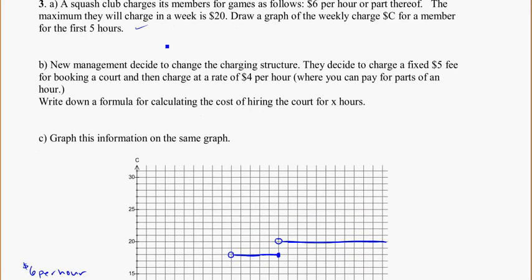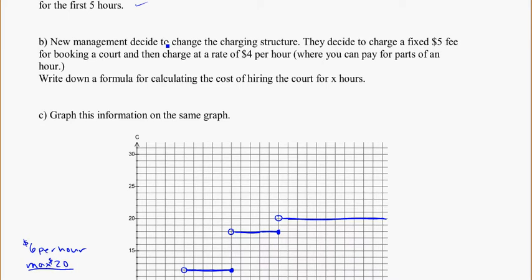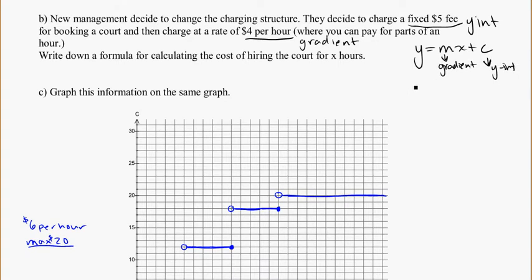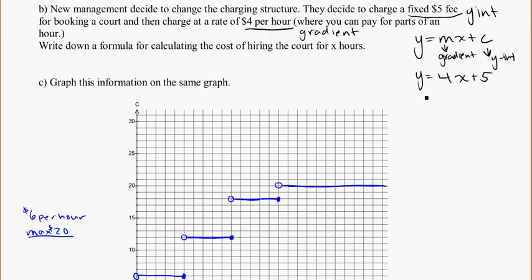And the new management, however, comes into the squash club and decides to change the charging structure. And they decide to charge a fixed fee of $5 for booking a court and then charge a rate of $4 per hour. So remember, a fixed fee, this is going to be your y-intercept. And $4 per hour, that per is a key word for me to tell me that this is going to be a gradient. So I need to write my own rule for this. Remember that we have y is equal to mx plus c, where m is our gradient. And c is the y-intercept. So y is equal to 4x plus 5. And I guess putting it into context, cost, for a time, we're going to have c is equal to 4t plus 5. So that is the formula for the cost of hiring it for x hours. I'm going to use t because that's what's on the graph.